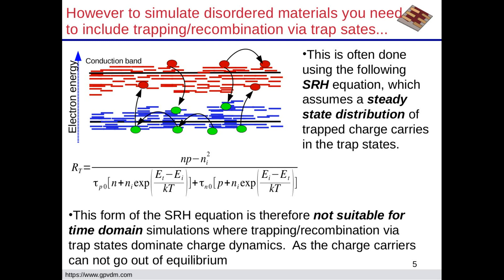But the issue is that when traps dominate your device, like in these third-gen materials, trapping becomes very, very important, and the charge in the trap states becomes very important. So you don't want to just have it as a single equation. You really want to actually have the trap charge in a state so it can affect the electric field.